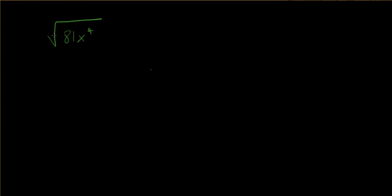Okay, so let's do this. It's a square root of 81 and x to the 4th. So we know that there's an understood 2 here. I should not have to write that 2 anymore.